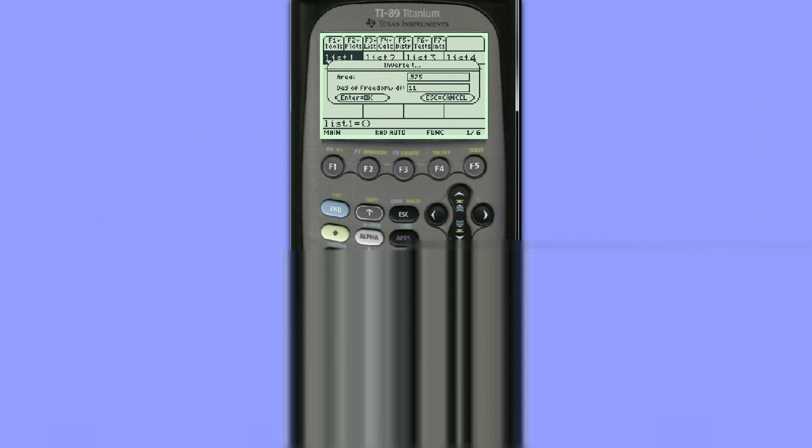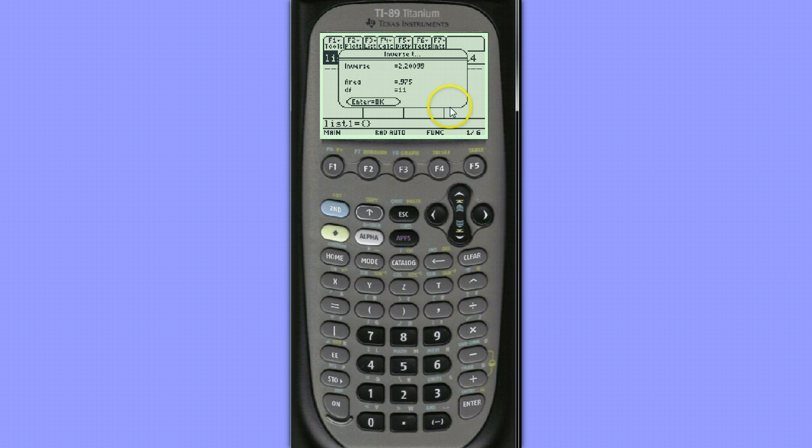I hit enter for OK. And I can see that my T-star value for a 95% confidence interval with 11 degrees of freedom is about 2.2. Thank you.